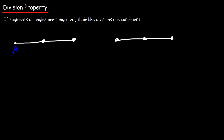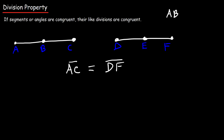Let's use a similar example with the same points A, B, C and D, E, F. This time we're given that AC is congruent to segment DF. If that is true, does that mean AB is congruent to DE? Let's say B is the midpoint of AC and E is the midpoint of DF.